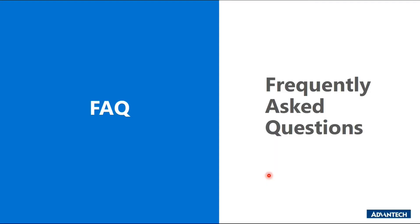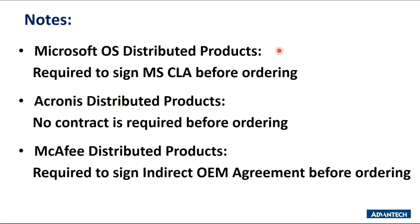We have now reached the FAQ session. When customers purchase the Microsoft OS distributed product — meaning they purchase the OS from Advantag without bundling hardware — they will need to sign the Microsoft CLA (Customer License Agreement) before ordering. By signing the CLA, the customer becomes an OEM to proceed with the purchase of Microsoft OS distributed products. The CLA is done over a secure internet portal from Microsoft. It is cost-free and does not include any minimum quantity or pricing. It is a base license agreement covering all available products in this licensing option. CLA expires typically every one to three years and renewal is required. When the CLA is within 45 days of expiry, an automatic email from Microsoft is sent to the authorized representative.